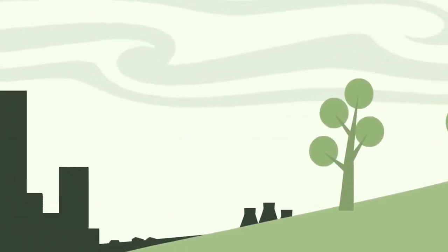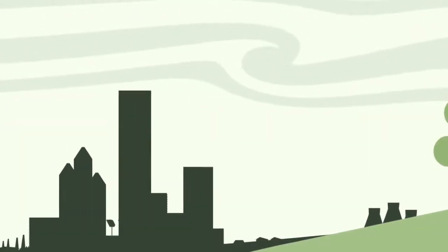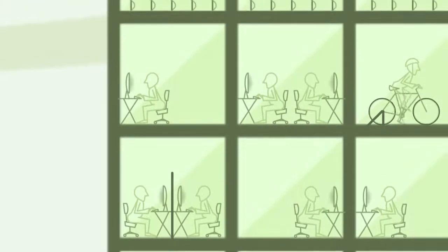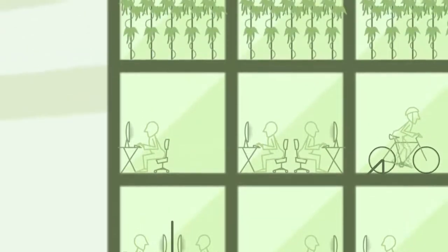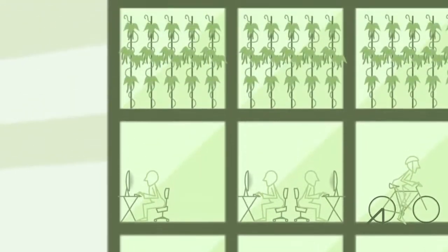Vertical farming could turn this on its head, or at least its side. It would bring together a host of emerging technologies by putting food production on the buildings we live and work in.